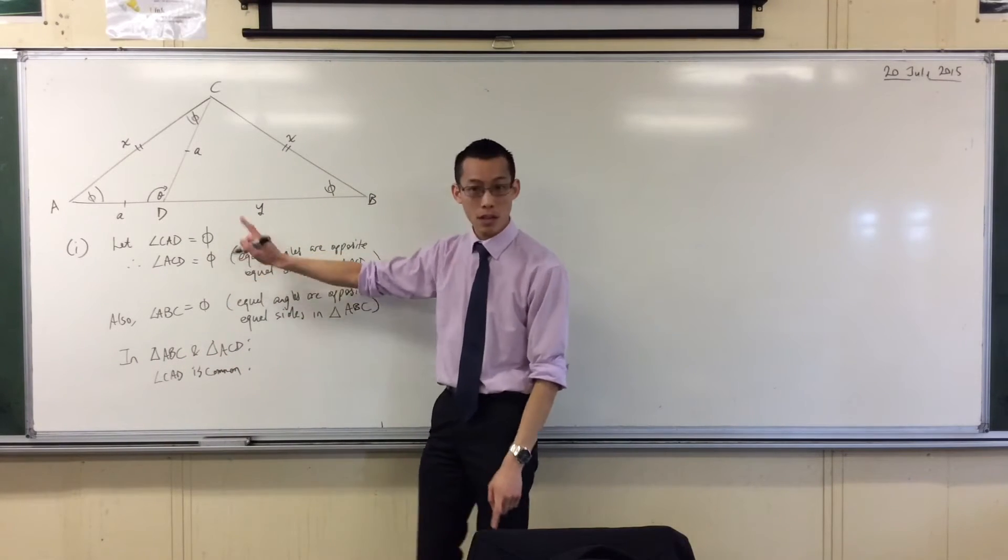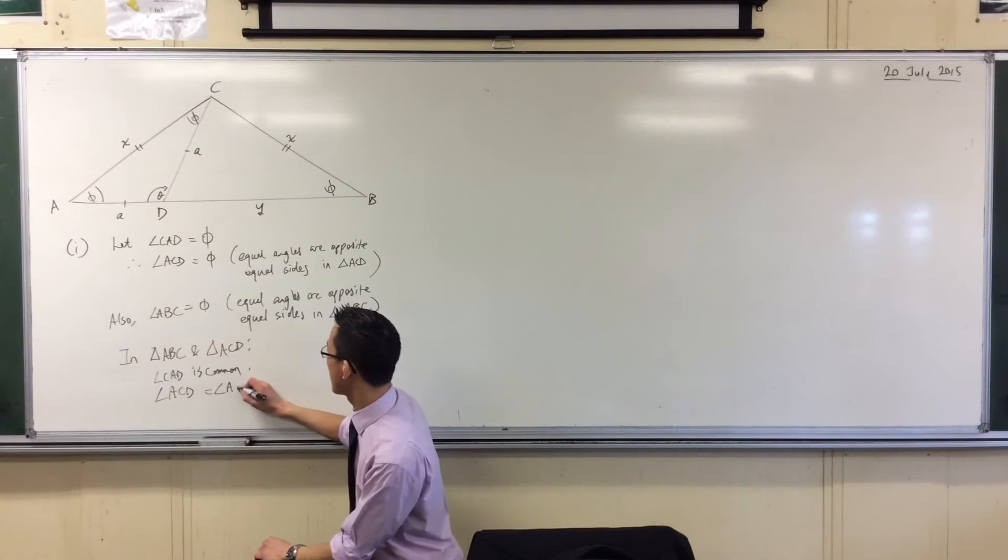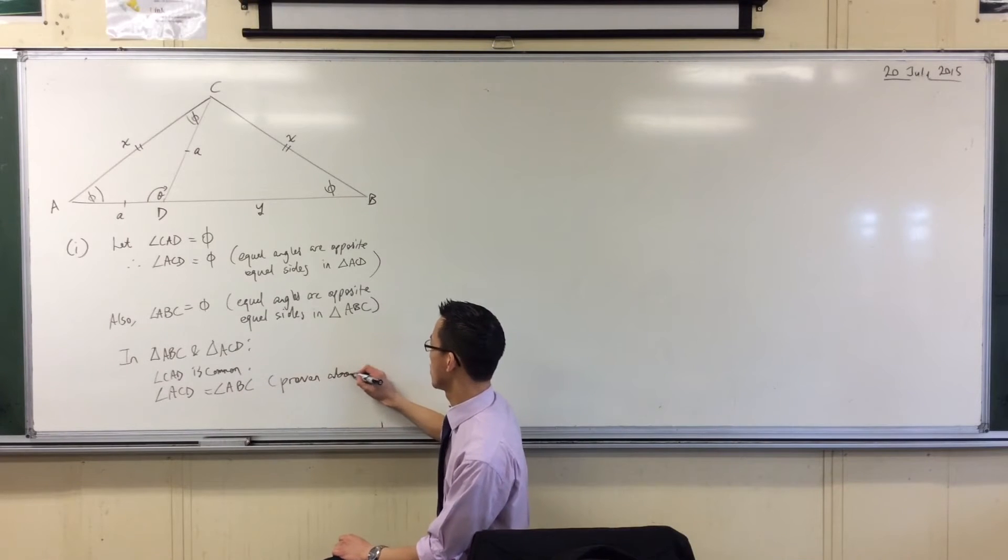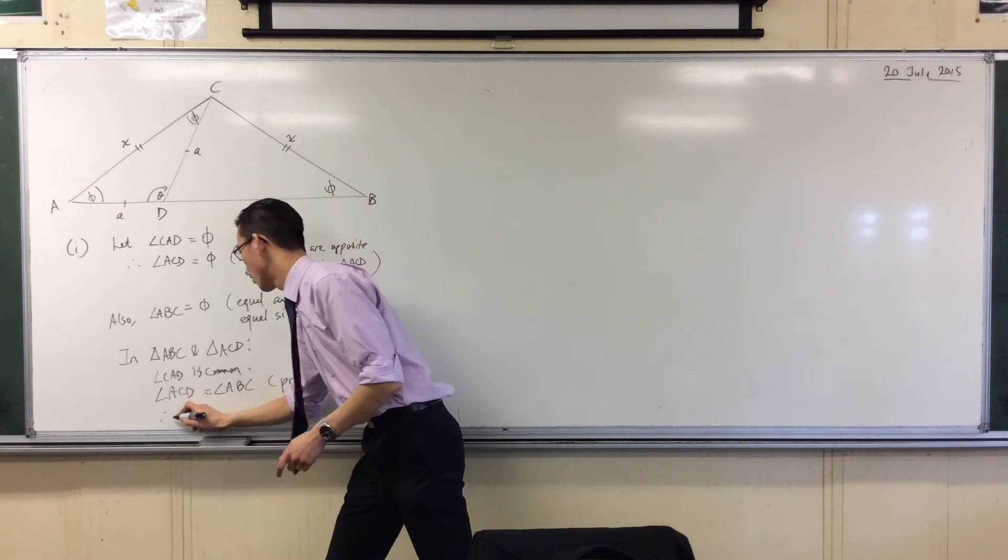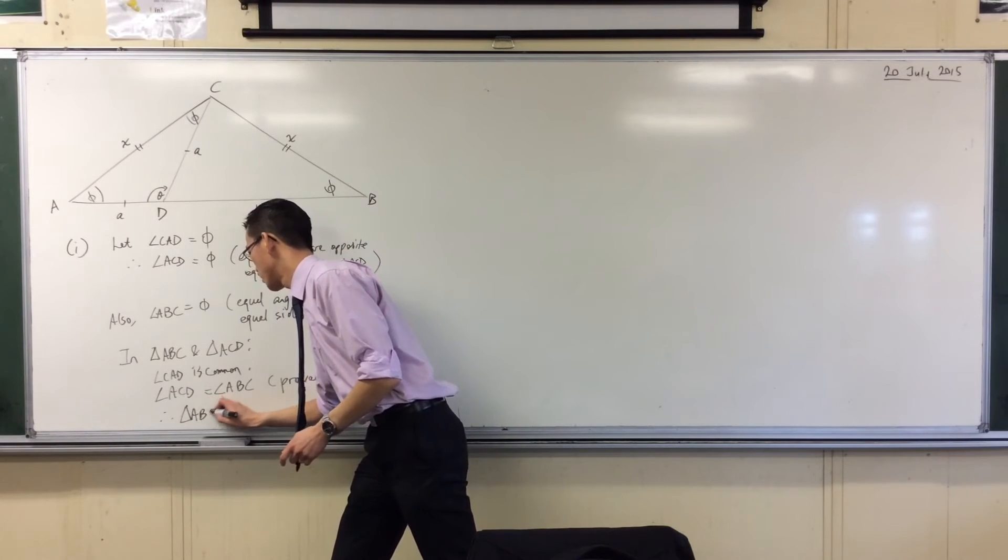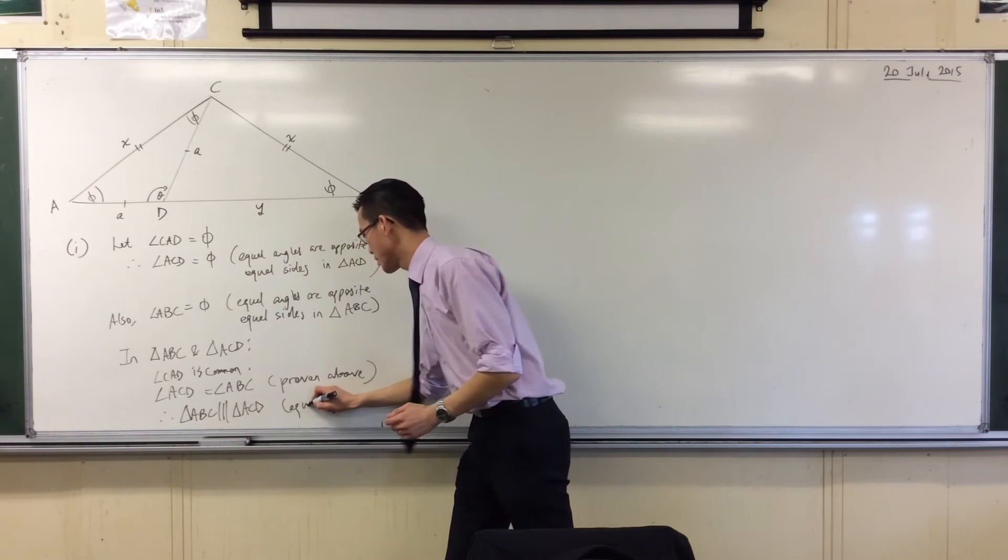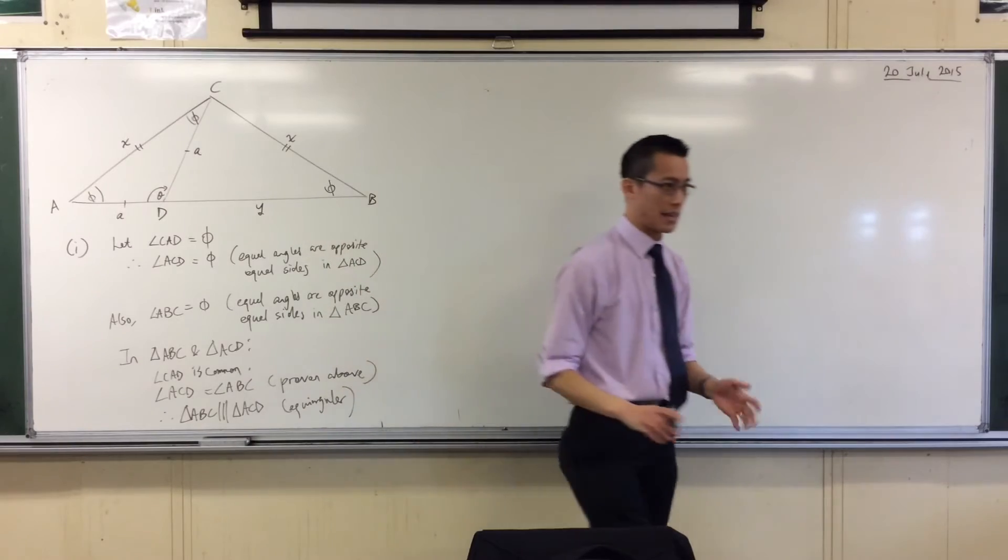Okay, and then I just went and proved these two, right? So I can say ACD is equal to ABC. I just showed you why, okay? Two pairs of angles, therefore, similar. And of course, my reason is equiangular. Sorry, that's a bit messy. You get the idea, okay?